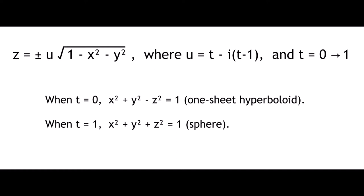This is usually done algebraically. For instance, a non-degenerating transformation from the one-sheet hyperbola, x squared plus y squared minus z squared equals 1, can be given by this equation, where the coefficient u varies from i to 1, as t increases from 0 to 1.